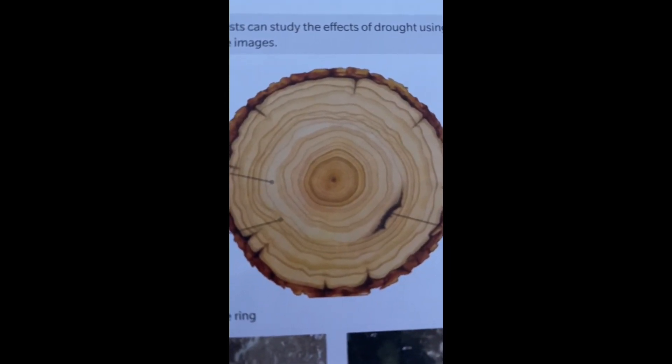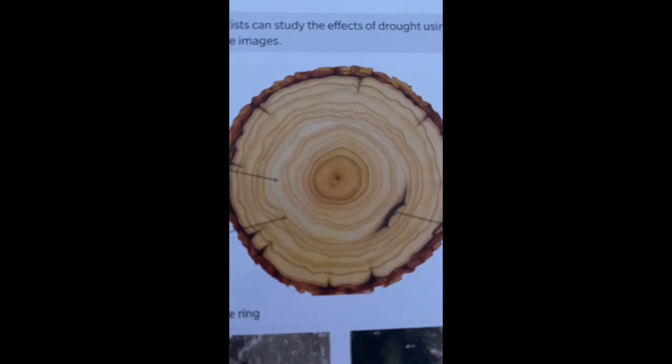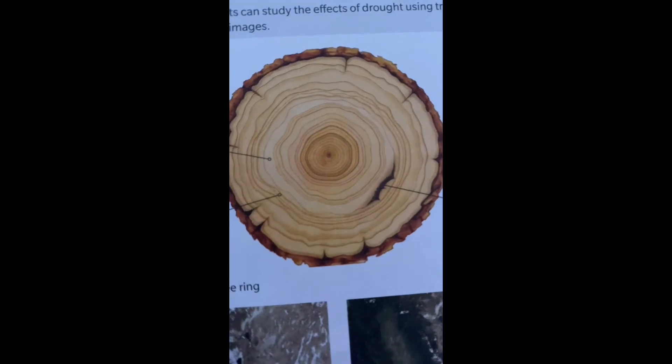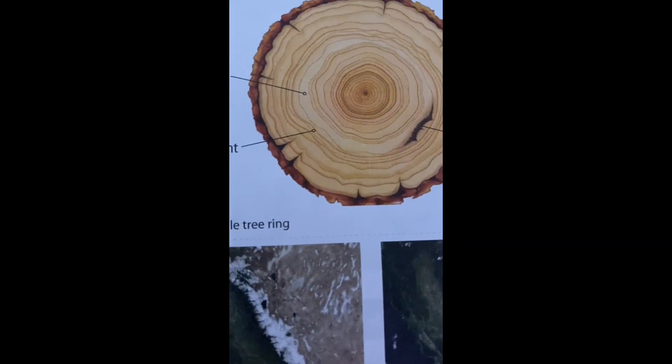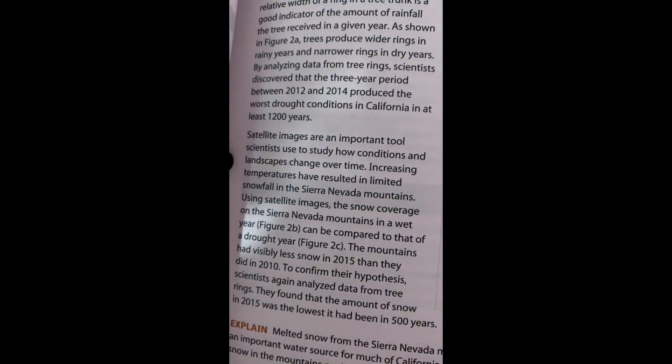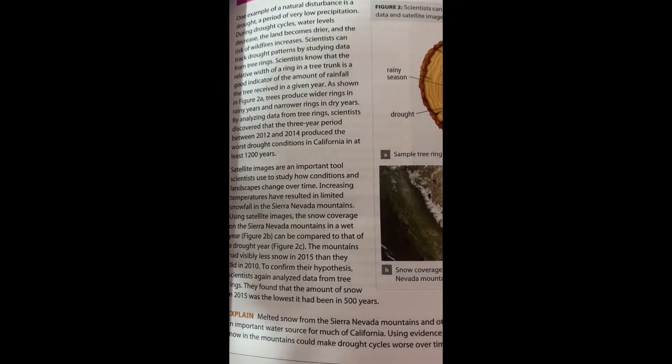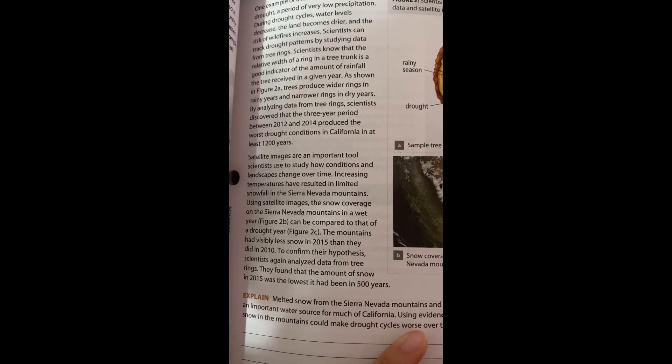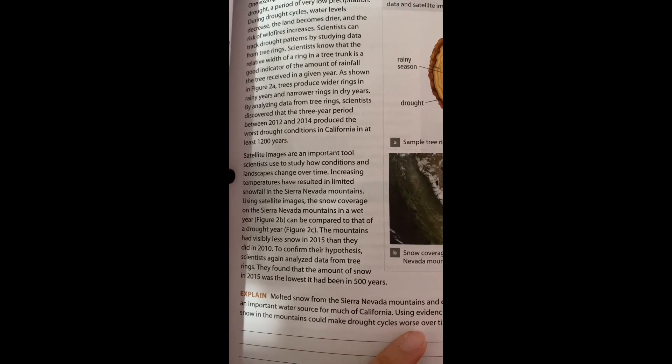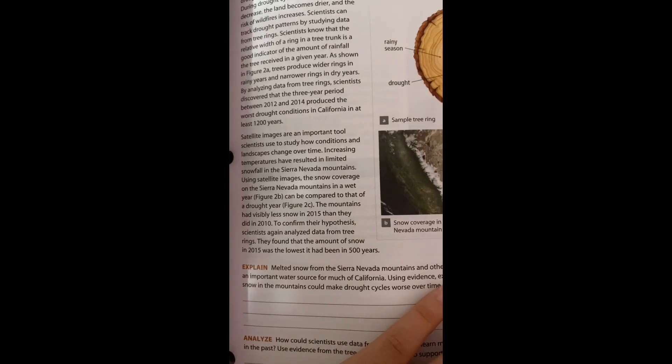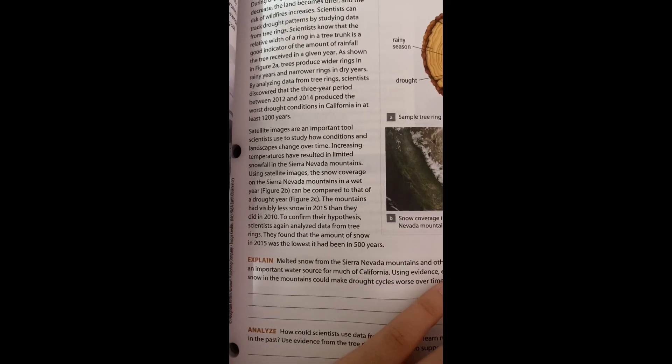The period between 2012 and 2014 produced the worst drought conditions in California in at least 1,200 years. Satellite images are important to scientists to study how conditions and landscapes change over time. Limited snowfall in the Sierra Nevada mountains resulted from increasing temperatures. Satellite images of snow coverage on Sierra Nevada mountains show a wet year compared to a drought year, with less snow in 2015 than 2010.